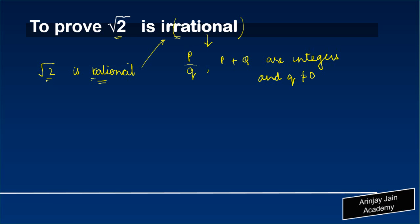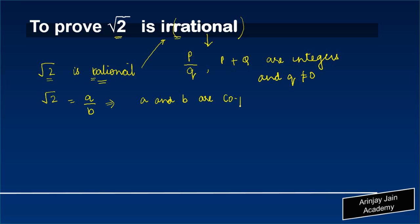So if root 2 is rational, then what that implies is that root 2 can be written as A upon B, in such a manner that A and B are co-prime. Now, what are co-prime? Co-prime means that the highest common factor of two numbers — in our case A and B — is 1. So root 2 can be written as A upon B, where A and B are co-prime.